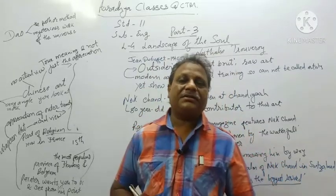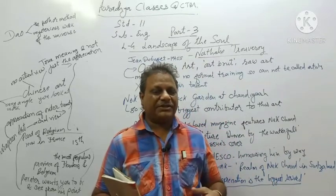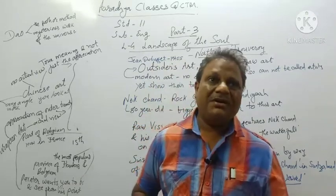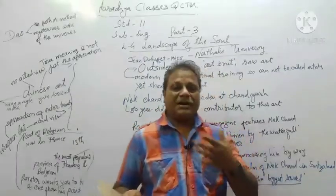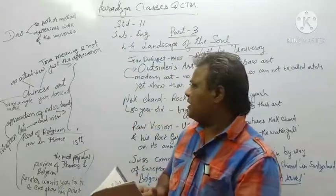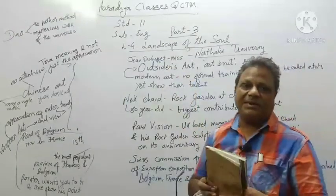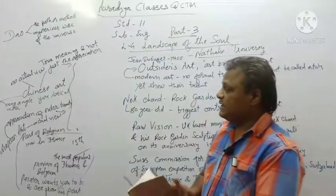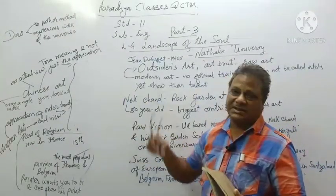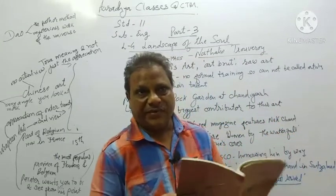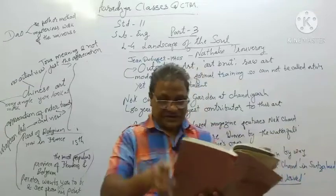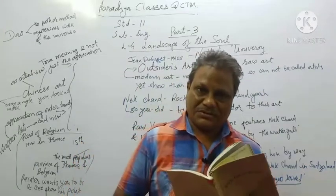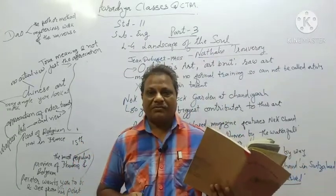In this video we will see the third form of art which is very much in vogue these days — that is modern art, we call it modern art also. This art was started by Jean Dubuffet in the 1940s. It has different names: we can call it modern art, we can call it outsider's art, we can call it art brute, and we can also call it art in its raw form — raw art.